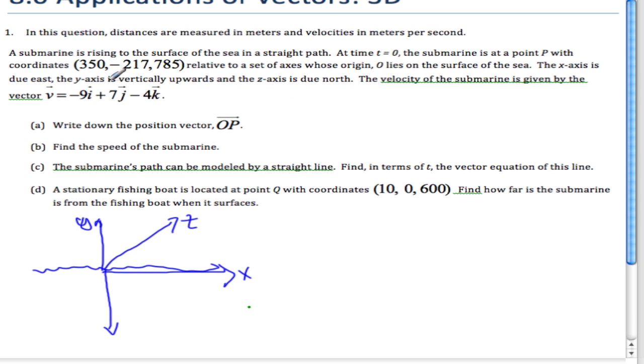The velocity of the submarine is given by this vector equation here. I know that the submarine is at point P somewhere - this is point P (350, -217, 785).